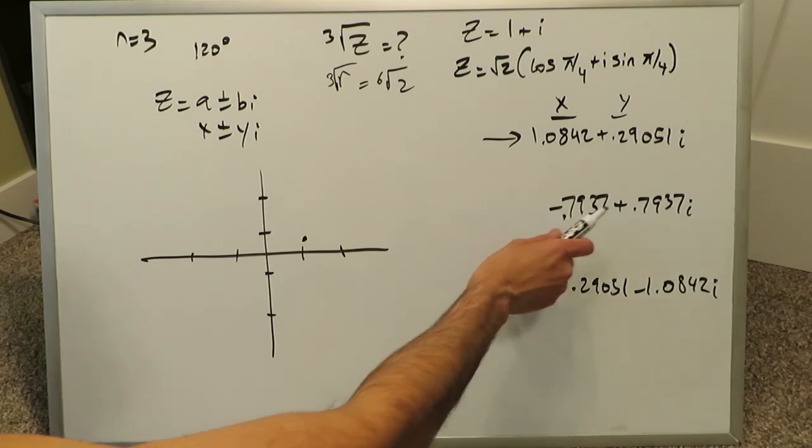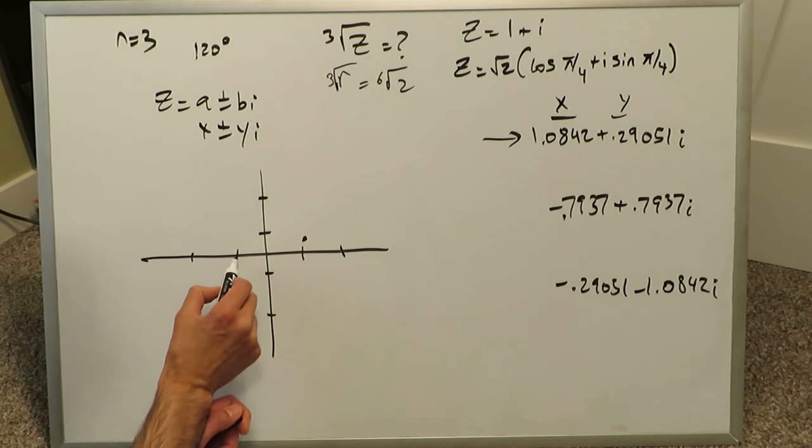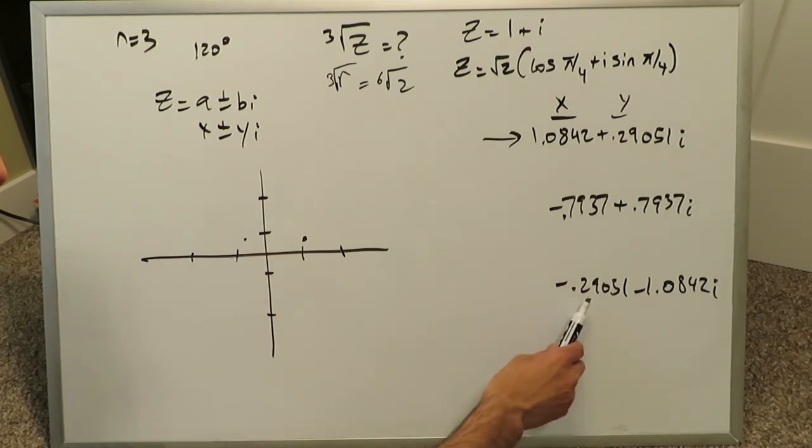My second root is a minus 0.7937 and a positive 0.7937. It's not going up to minus 1 or plus 1, but it's going close to the 1, so you can estimate it would be somewhere right over here.